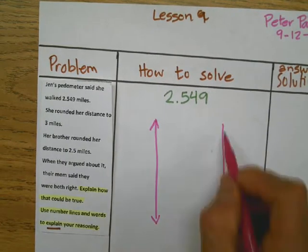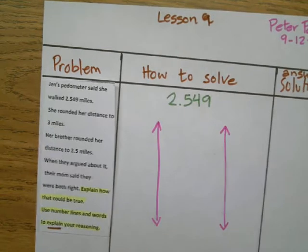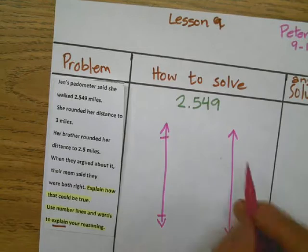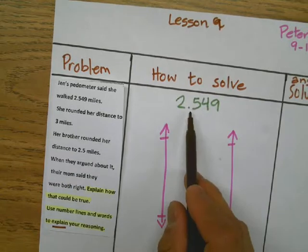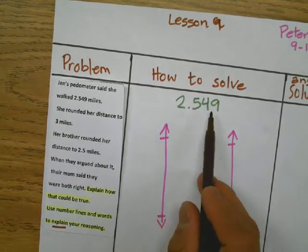We have Jan and we have brother. They both round to a certain number, right? So let's look at this. If we look at the number 2.549, we know that that number is between 2 and 3.